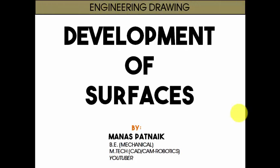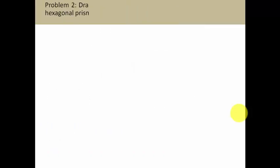Hi guys, this is Manas and welcome back to my channel. This is going to be yet another tutorial in this series of problems based on development of surfaces. This time around we will be picking up a solid called a hexagonal prism, and its development is going to be made under certain conditions. Let's start with the problem — it's problem number 2 for prism development.